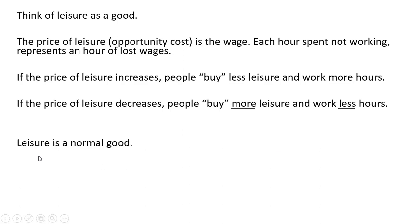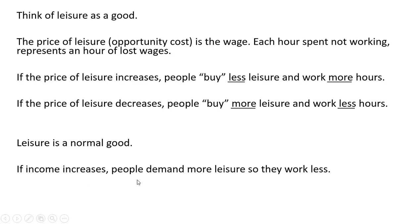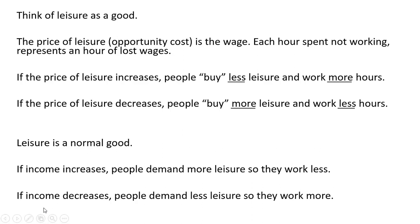We can also think of leisure as a normal good. If income increases, people will buy more normal goods. So if leisure is a normal good, people will demand more leisure, and that means they'll work fewer hours. If income decreases and leisure is a normal good, people will demand less leisure, which means they'll work more hours.